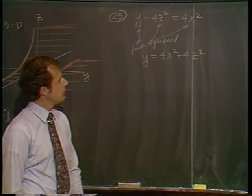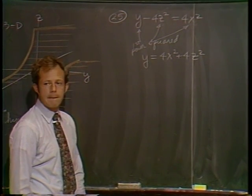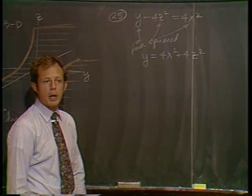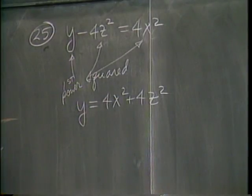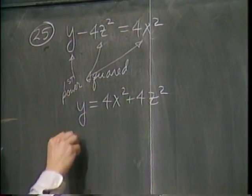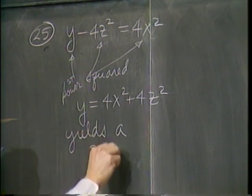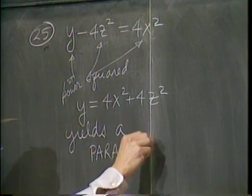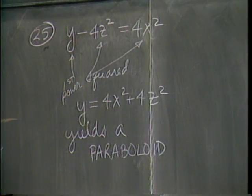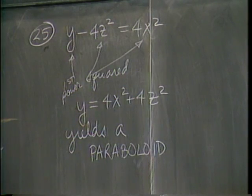What you might want to do is write it this way: y equals 4x squared plus 4z squared. That is, combine the squares together. And as such, you might see what I indicated yesterday to be a parabolic surface, a paraboloid.